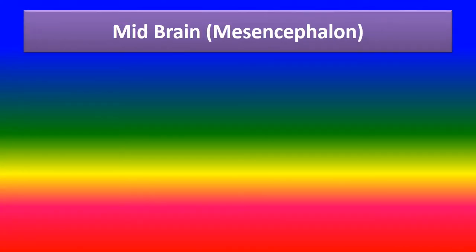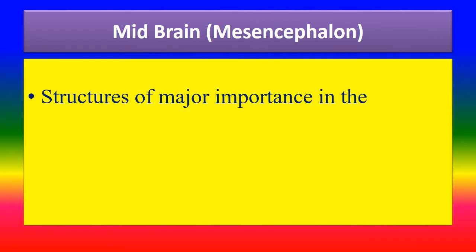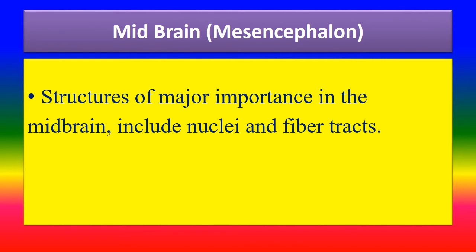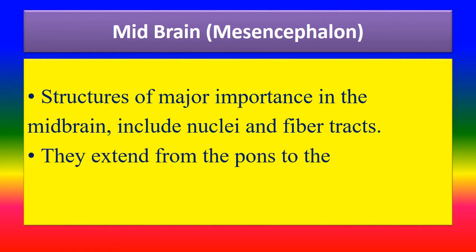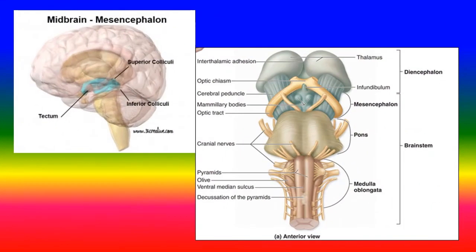The midbrain, or mesencephalon: structures of major importance in the midbrain include nuclei and fibre tracts that extend from the pons to the hypothalamus.